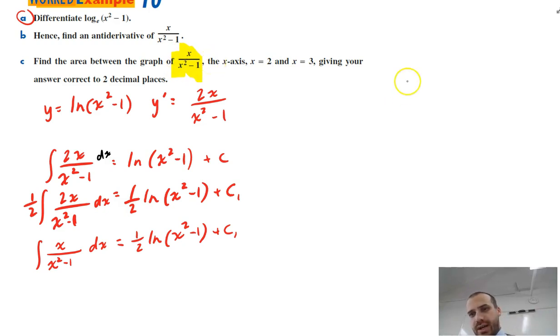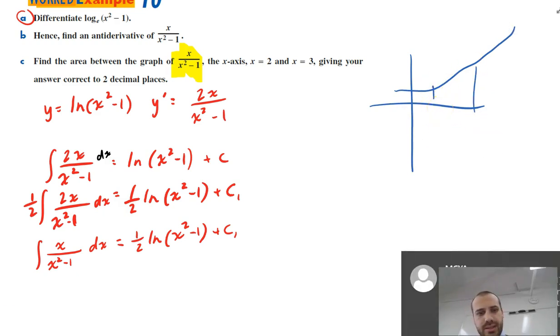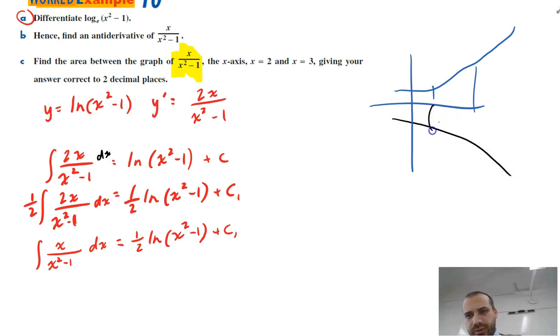Now, because I don't know what that looks like, some options are, maybe it's just all above the curve between 2 and 3. Maybe it's all below the curve between 2 and 3. Maybe, and this would be like a pretty rough option, maybe between 2 and 3 it's like got an x-intercept.